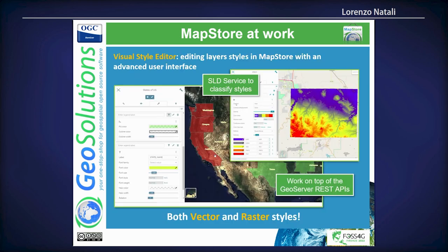We have a visual style editor that allows you to edit layer styles in MapStore with an advanced user interface that interacts directly with the REST API of GeoServer. Instead of writing SLD by hand, you can use the graphical editor to add rules like SLD, write SLD in a text editor, or use CSS styling. This works for both vector and raster styles.